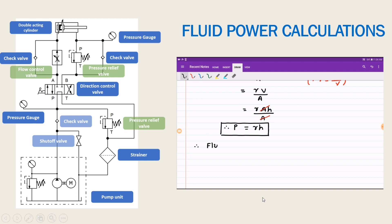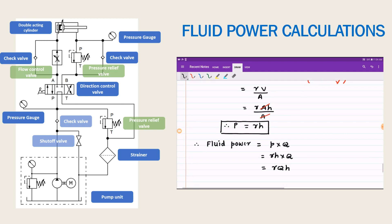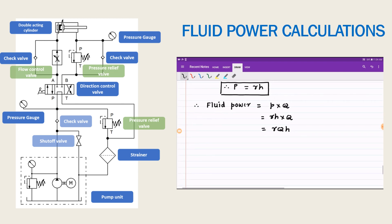We can substitute this value to get another expression for fluid power. Since fluid power equals p into q, substituting p equals gamma into h gives fluid power equals gamma times q times h. This is the alternative expression for fluid power in terms of watt.